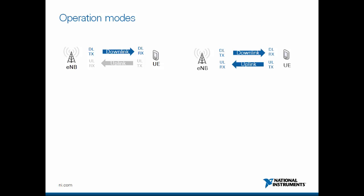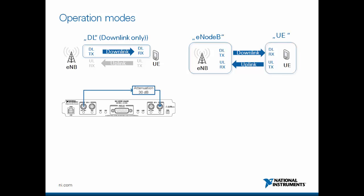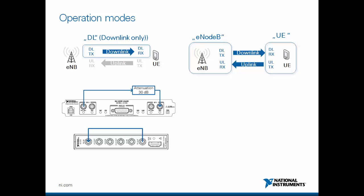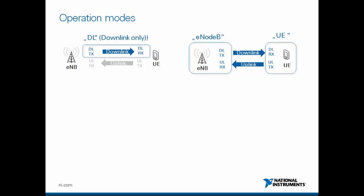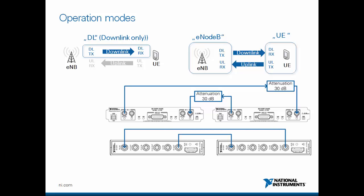Let me explain the operation modes. There is a downlink transmitter and downlink receiver, which implements the downlink-only operation mode — one FPGA code with associated host code implementing just this functionality, usable in a single-device setup. On the other side, you can have an E-NodeB operation mode implementing downlink transmitter and uplink receiver, and the UE mode implementing downlink receiver and uplink transmitter. The downlink-only mode can be used in a single-device setup with either a USRP RIO or FlexRIO, while E-NodeB versus UE requires a double-device setup with either a USRP RIO or FlexRIO.